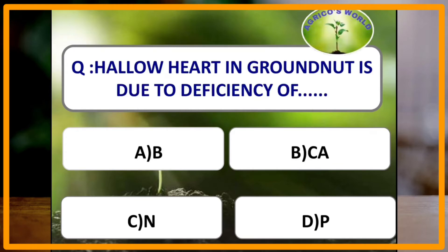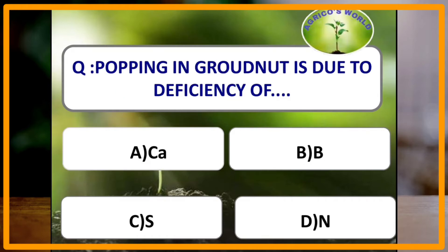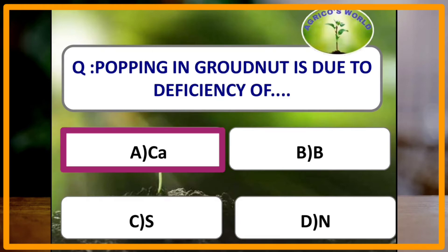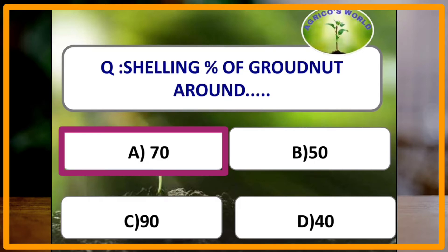Hello heart in groundnut is due to the deficiency of which nutrient? The answer is boron and it can be cured by spraying boric acid. Popping in groundnut is due to the deficiency of which nutrient? The answer is calcium and it can be cured by application of gypsum. Shelling percentage of groundnut is around 70%.